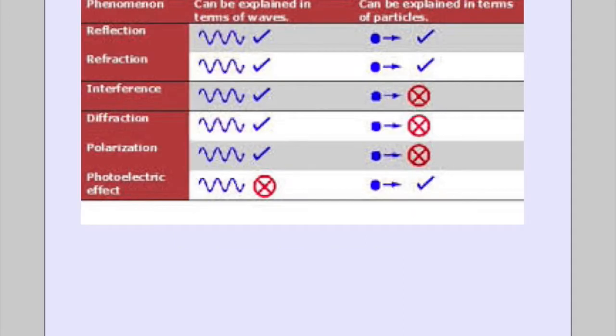This next slide shows reflection—both wave and particle are supported. Refraction, just like we showed, both wave and particle. But when you start to get interference, diffraction, and polarization, it's only the wave properties of light that support that.